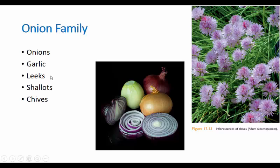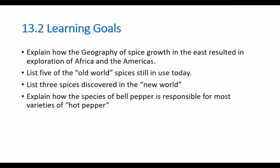Onions, garlic, leeks, shallots — again, I said herbs are primarily leaves, and here you're working with the root, so that leaf-versus-not-leaf characterization is weak. Everything I'm talking about today is a flowering plant, so there are flowers on everything, including chives, if you let them grow long enough. Now let's move on to 13.2.